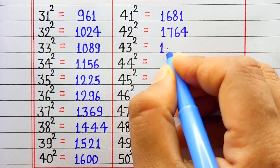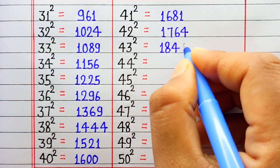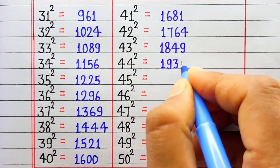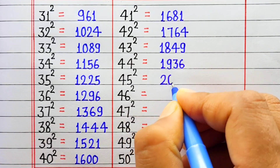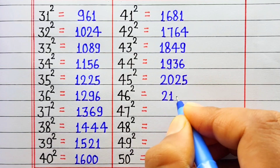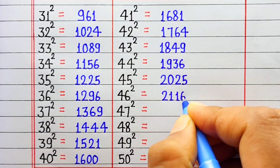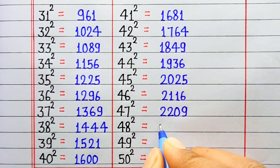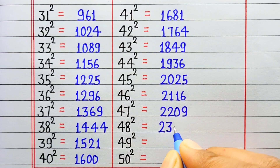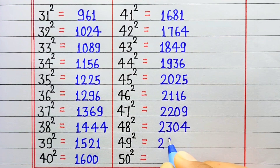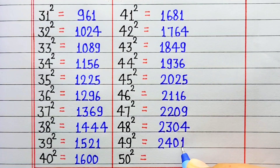Square of 43 is 1849. Square of 44 is 1936. Square of 45 is 2025. Square of 46 is 216. Square of 47 is 22209. Square of 48 is 2304. Square of 49 is 2401. Square of 50 is 2500.